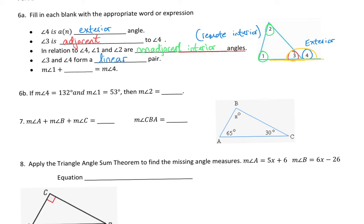What can we say about angle 1 plus angle what equals angle 4? Well, that's our exterior angle theorem. The exterior angle, angle 4, is equal to the sum of those non-adjacent interiors. So if I took angle 1 and added the measure of angle 2, I'd get the measure of angle 4. That's your exterior angle theorem — the sum of your non-adjacent interiors.